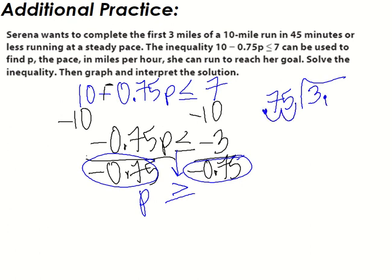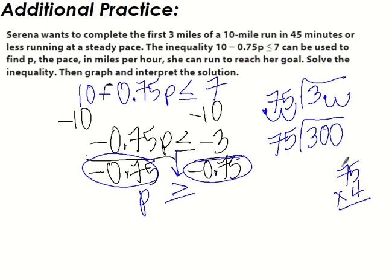And we need to go find out how many times 0.75 goes into 3. But remember, go 1, 2, 1, 2. So it's really 75 into 300. So let's do 75 times 4. That's 20, 28, 29, 30. There it is. Perfect. 4. And so we got, she has to do it in 4 miles per hour or faster. That's what that means.